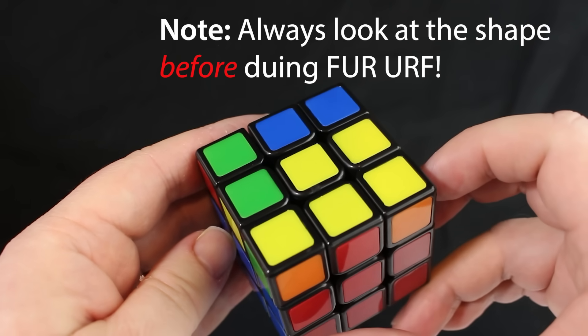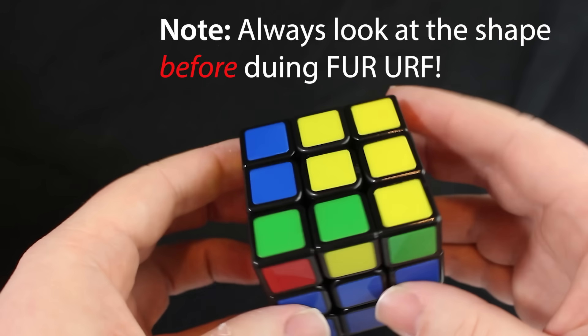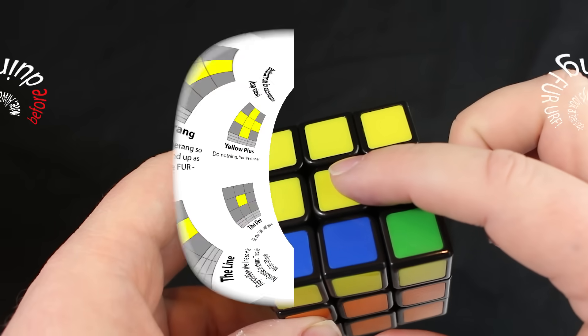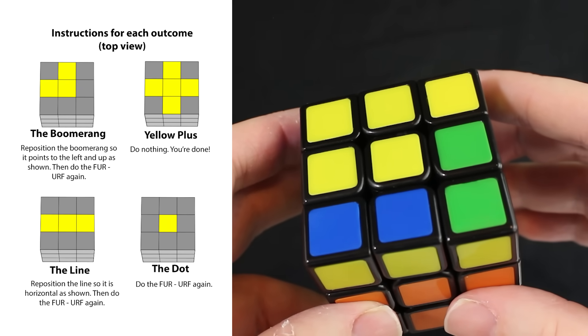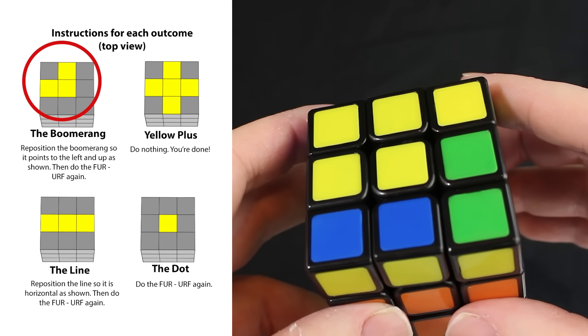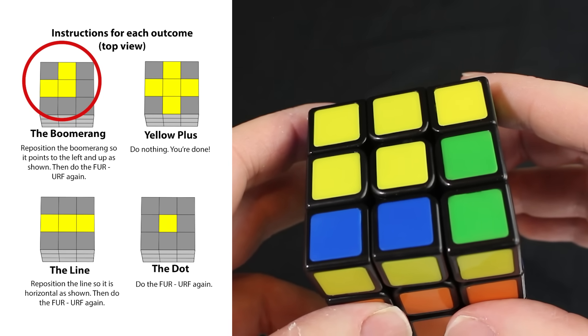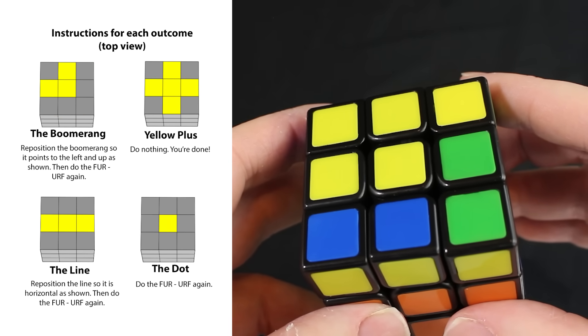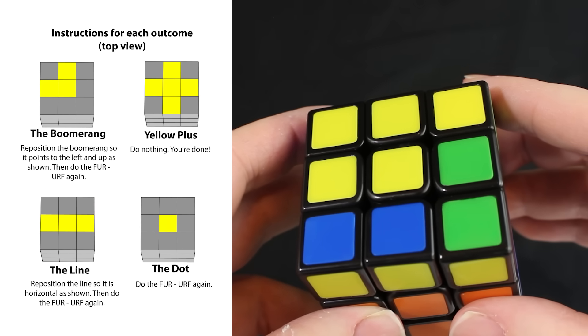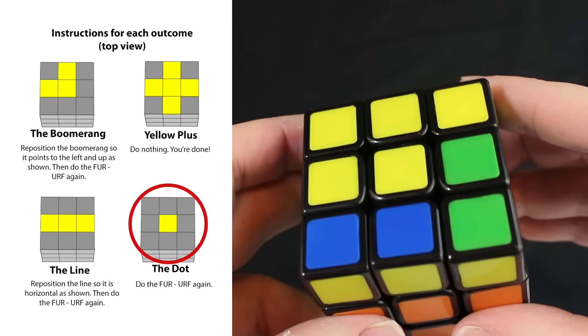So I scrambled the cube and we're going to try this again. We need to first look at this and decide what shape this most looks like. If you look at these charts, we've got the boomerang, which if you ever see, you need to adjust it so it's pointing in the orientation shown on this image. If you get the line, then make sure it's horizontal. And if you get the dot, it just means you need to redo the moves.